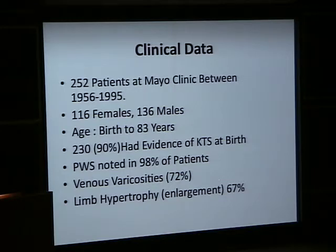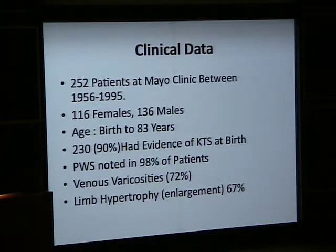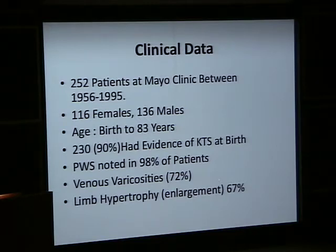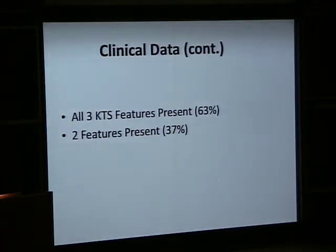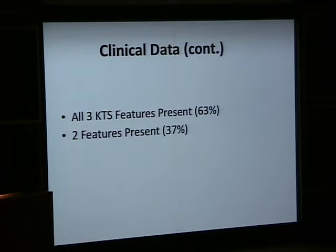KTS is diagnosed at birth about 90% of the time. A port-wine stain is found in 98% of those patients. Varicosities occur in 72%, and limb length discrepancy and hypertrophy in 67%. In order to diagnose KTS, at least two features must be present. 63% of patients have all three features, and 37% have only two.